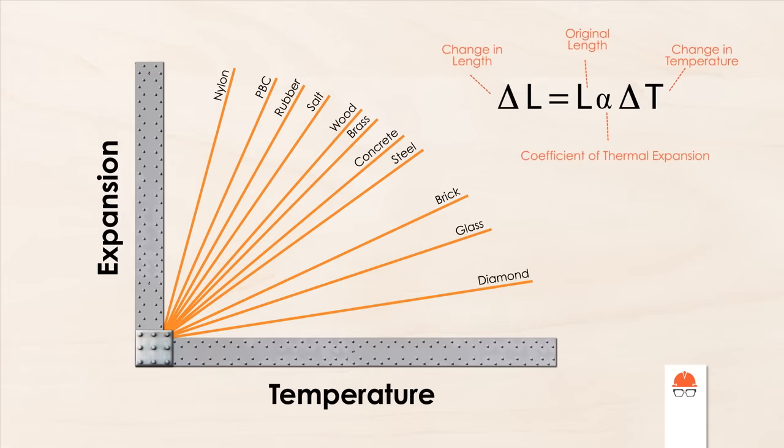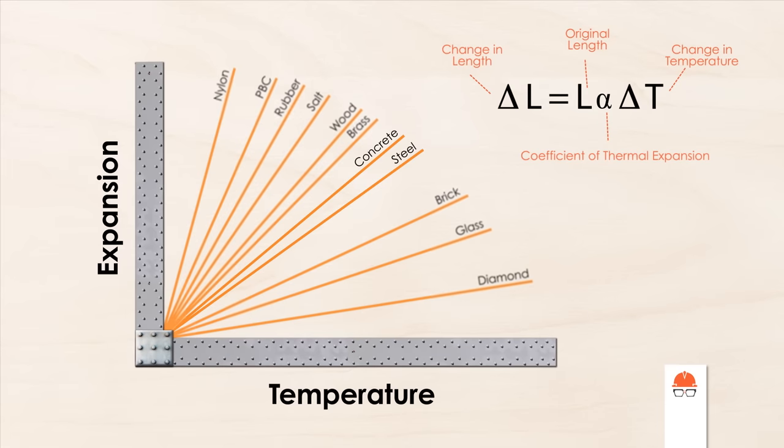Lucky for civil engineers, the thermal expansion coefficients for steel and concrete are nearly identical, which is why we can combine them into the ubiquitous construction material, reinforced concrete, without worrying too much about fluctuations in temperature pulling it apart. But even though they expand and contract at the same rate, they still expand and contract.